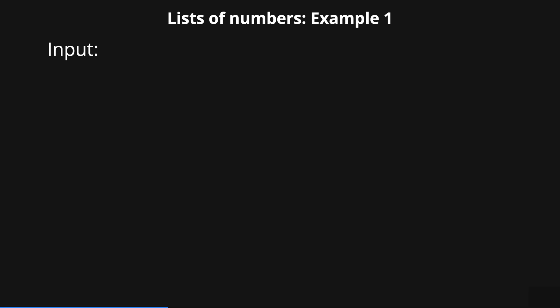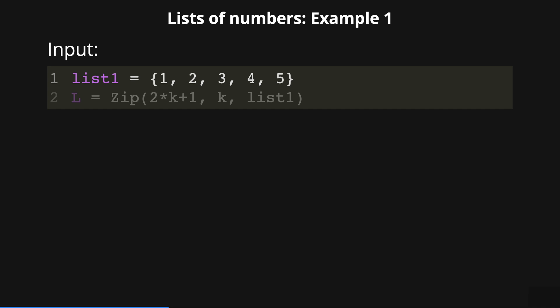In the input box we are going to type list1 equal to the sequence from 1 to 5 with an increment of 1, that is 1, 2, 3, 4, 5. Then we use the zip command with the expression 2 times k plus 1 where k is the variable that belongs to list1.